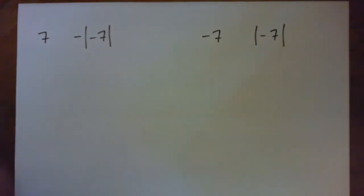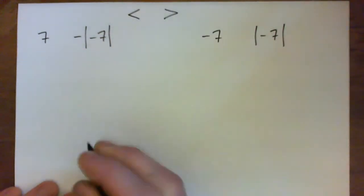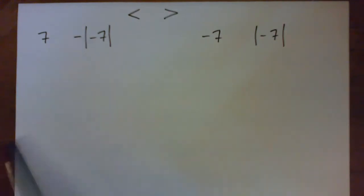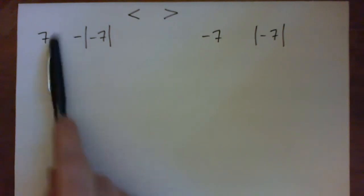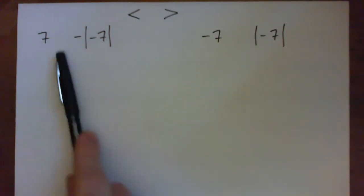Okay, so let's do these two problems. We've got to place one of the symbols, the less than or the greater than symbol, between the following to make the resulting statements true. So we need a symbol between these two expressions and a symbol between these two expressions. So let's start with this one here.